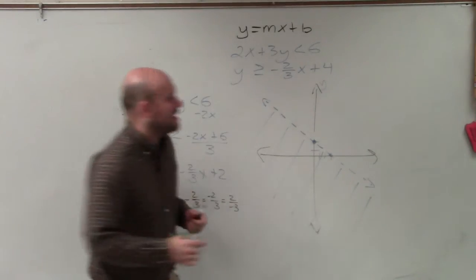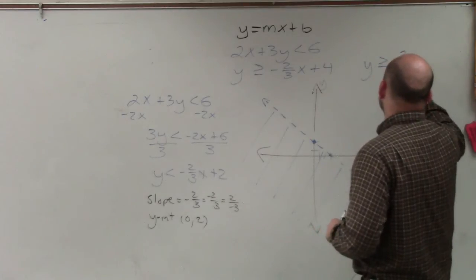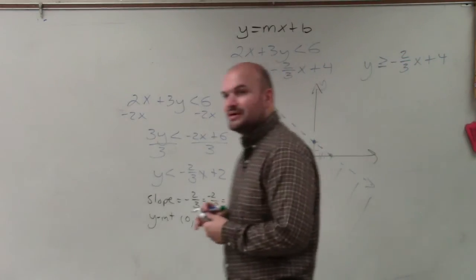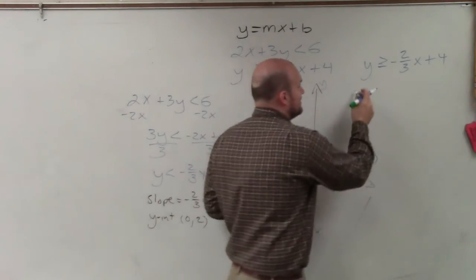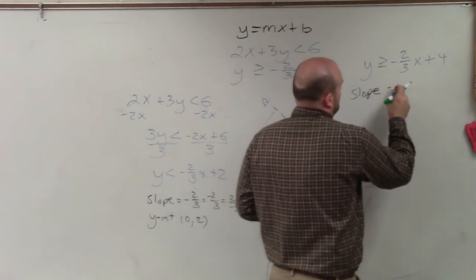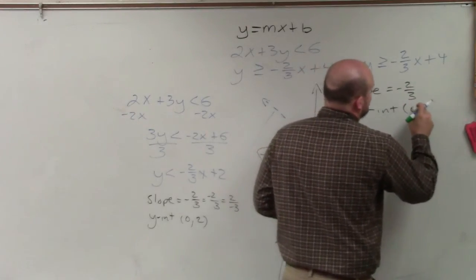Now I go ahead and graph the other equation. y is greater than or equal to negative 2 thirds x plus 4. And what we notice about this equation, ladies and gentlemen, is again the slope is the same thing. And my y-intercept now is 0, 4.